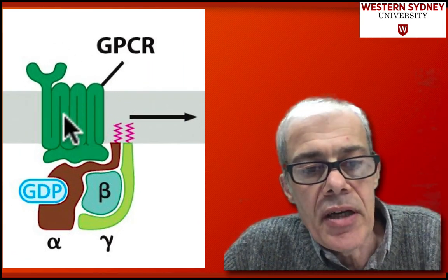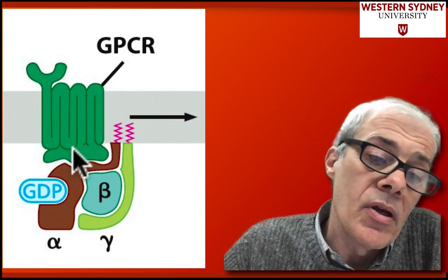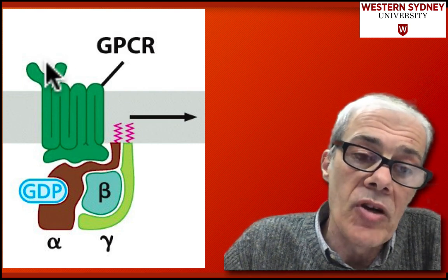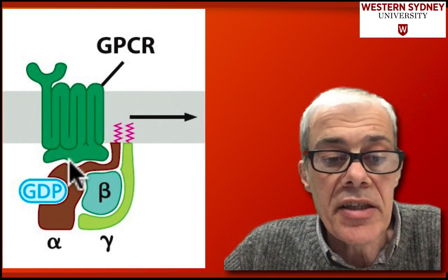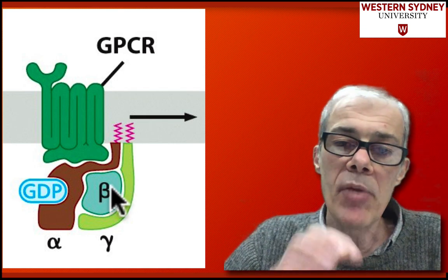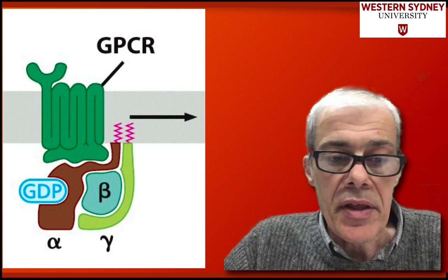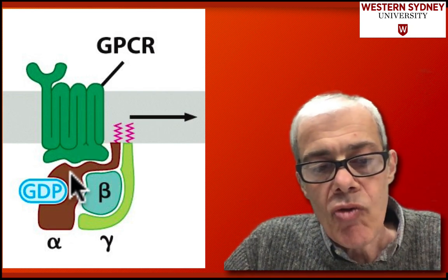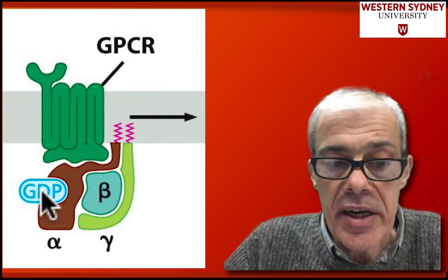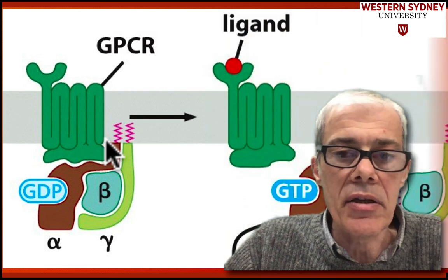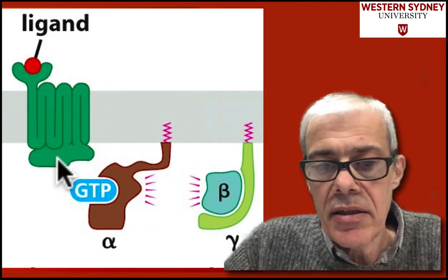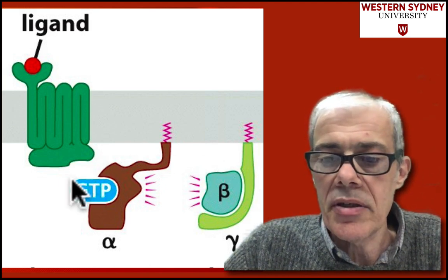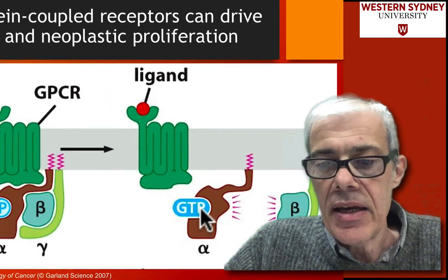This receptor has its own guanine exchange factor as part of its domain. The growth factor activates the guanine exchange factor, which in this case doesn't activate RAS — a monomeric G-protein — but instead activates the alpha subunit of a heterotrimer. We have a G-protein bound to GDP as part of a complex. When it picks up the signal, the guanine exchange factor becomes activated, causing nucleotide exchange, and the heterotrimer splits into two parts — one of which is now activated — leading to cell signaling.